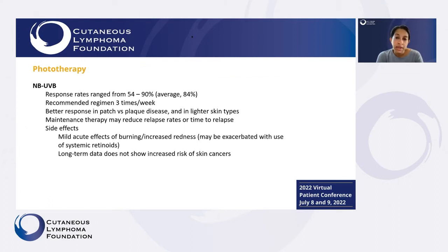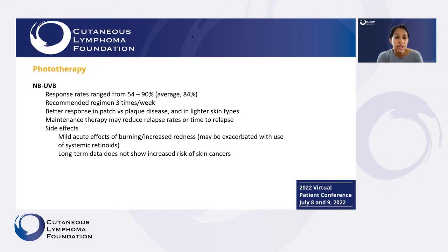Narrow band UVB is fairly effective in getting initial skin clearing. We typically start with doing this about three times a week — it's a short treatment but you would go to your dermatologist's office. It works better on areas where the lymphoma is thinner, so it works better in patch disease versus plaque disease, and can work better in patients with lighter skin. After getting some initial skin clearing, we'll cut down to maintenance with twice a week or once a week sessions, which may reduce relapse rates. Patients can experience some burning, redness, and irritation. In terms of long-term data, there is no increased risk of skin cancers with this treatment.